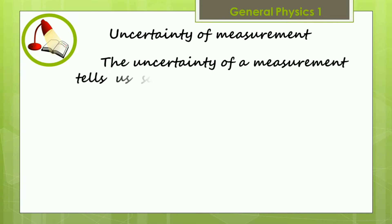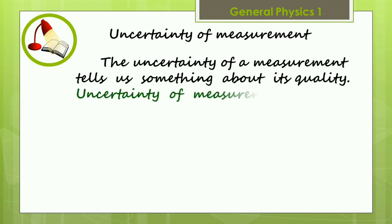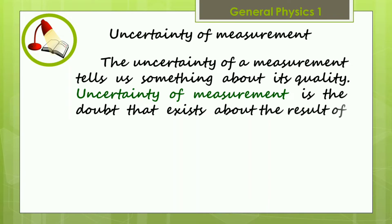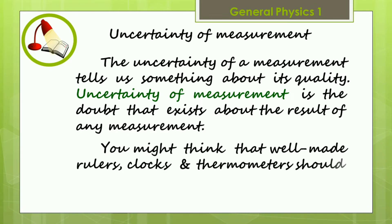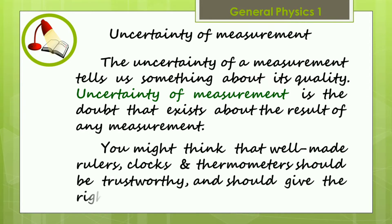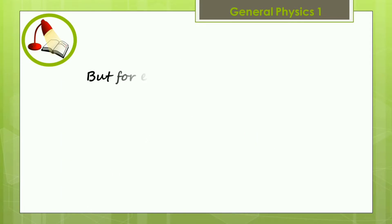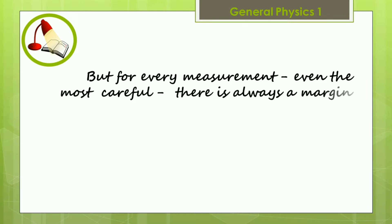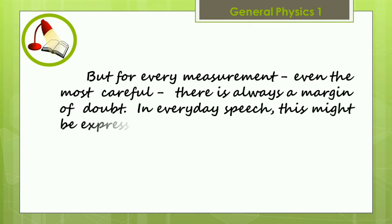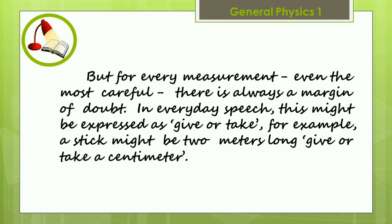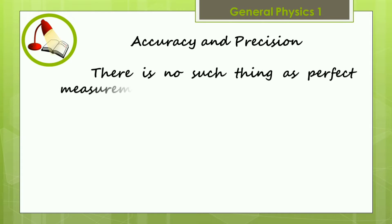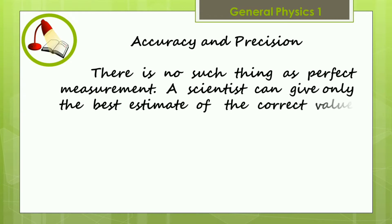The uncertainty of a measurement tells us something about its quality. For every measurement, we have to take a look at the uncertainty. Even the most careful measurement has always a margin of doubt. In everyday speech, this might be expressed as 'give or take.' For example, a stick might be 2 meters long, give or take a centimeter. There is no such thing as a perfect measurement. A scientist can give only the best estimate of the correct value along with its uncertainty.